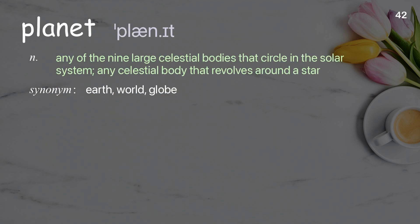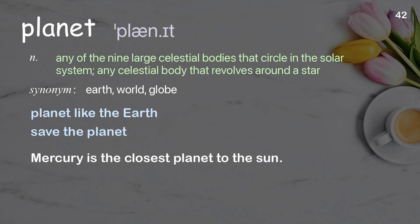Planet: Any of the nine large celestial bodies that circle in the solar system; any celestial body that revolves around a star. Examples: Planet like the Earth. Save the planet. Mercury is the closest planet to the sun.